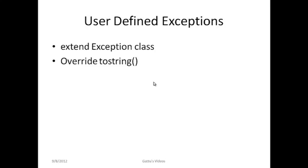To recap: we covered the two constructors chained exceptions provide, the two methods they provide, and how to create a user-defined exception. In the next session we will discuss in Eclipse how to create a chained exception with an example, and how to create a user-defined exception, so that the concepts will be clear. Please follow the next tutorial.